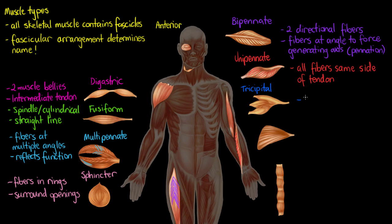The next type of muscle is tricipital. A tricipital muscle — as you can probably guess — is named after our triceps, and it's a muscle that has three heads. This muscle is located on the posterior of the arm, behind the bicep and behind the humerus bone.